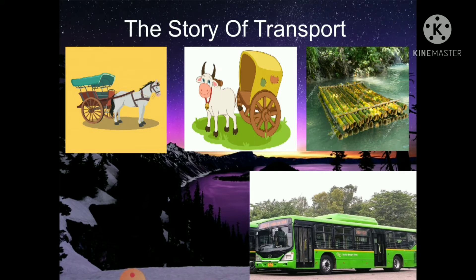The Story of Transport. In ancient times, when there were no means of transport, people used to walk on foot from one place to another. Later on, they learned to use horses, mules, camels and donkeys as means of transport.